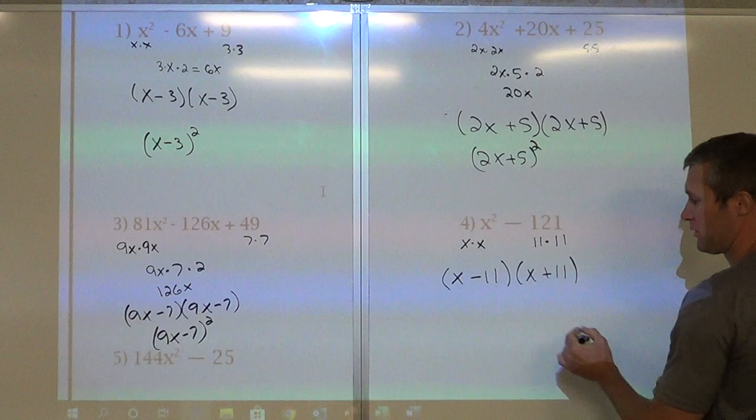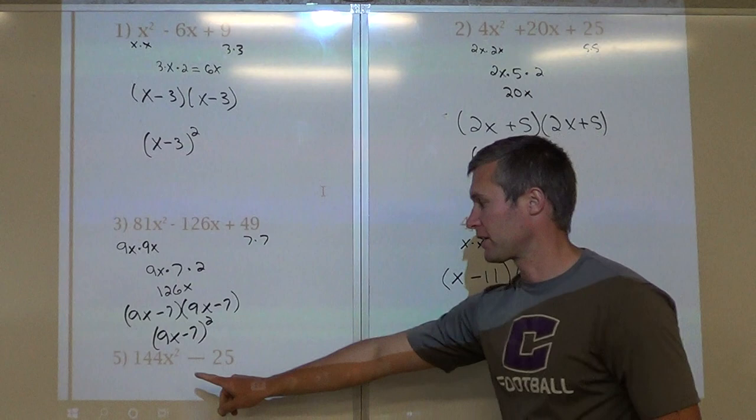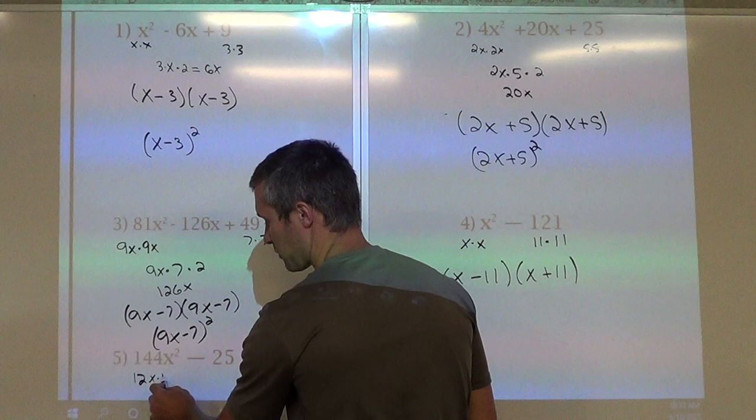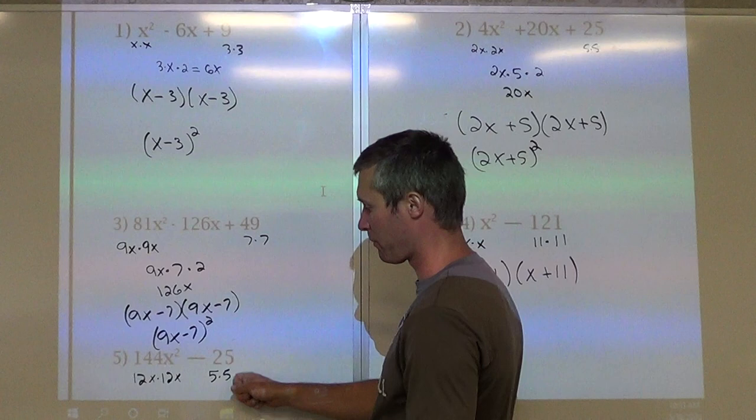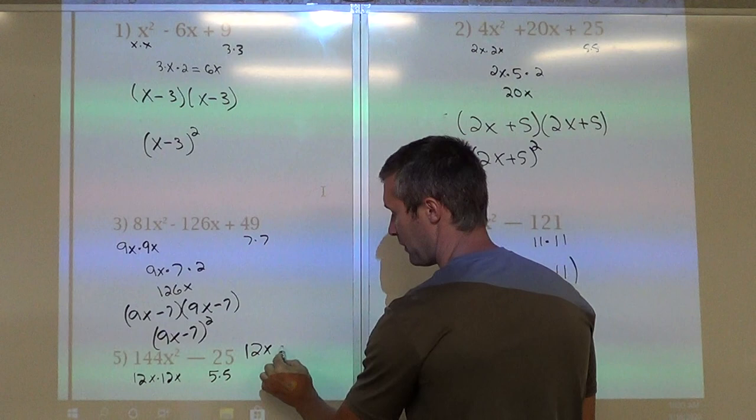If you switch the order, if you put plus first and minus second, that's okay. To get 144, that's 12. To get x squared, it's 12x, so that's 12x times 12x. 25 is 5 times 5, so these are both perfect squares. It's a difference, we're subtracting, so that would be 12x minus 5 times 12x plus 5.